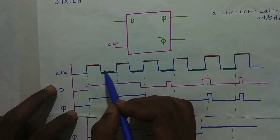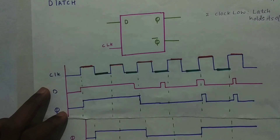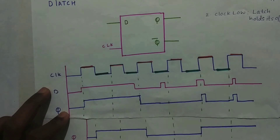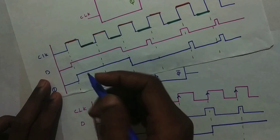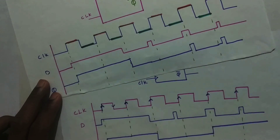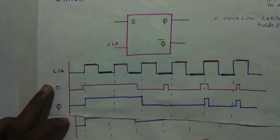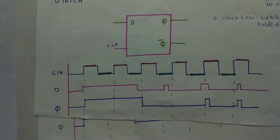If it's a negative level-sensitive latch, then it will be on during the low clock period and off during the high period — it will transmit input to output when the clock is low, and hold the value when the clock is high. It's the opposite behavior. I want you to draw the same waveforms for a negative latch and a negative flip-flop, take a screenshot, and comment below — I will check your answers. If you have any doubts please comment and I will respond within 24 hours. I hope you understood the difference between the timing diagrams of a D latch and D flip-flop. If you liked it, please share, like, comment, and subscribe.